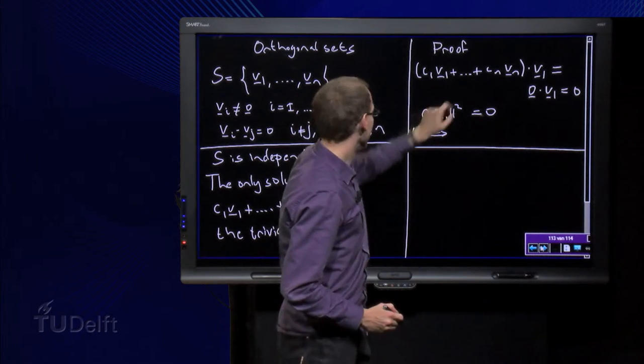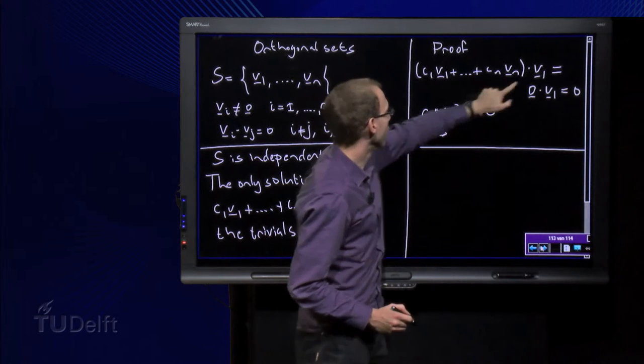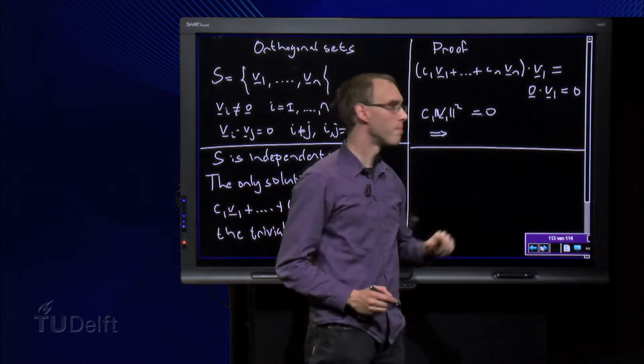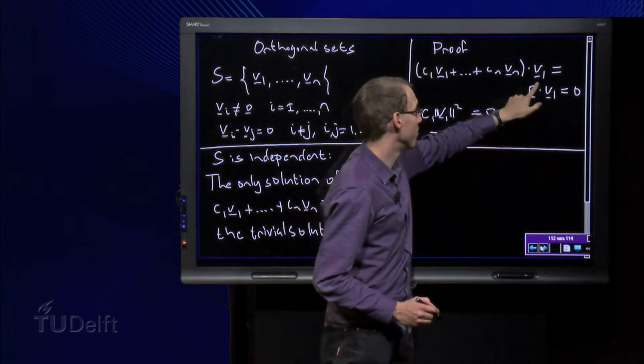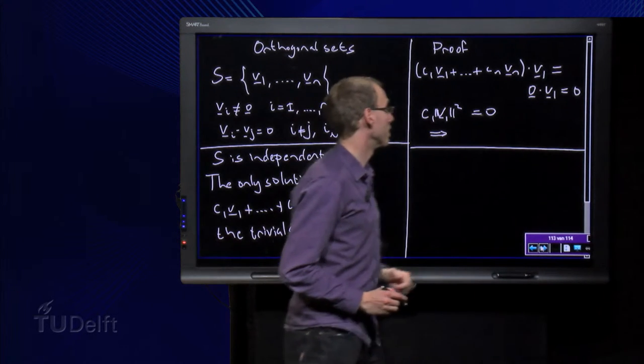Take the inner product of the equation over here with V1, and we have here a lengthy expression, and here we have the zero vector inner product with the vector V1 which equals the number zero.